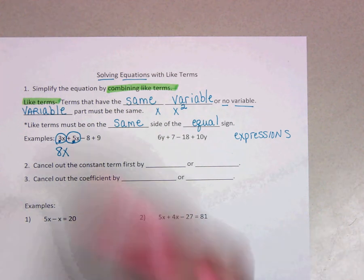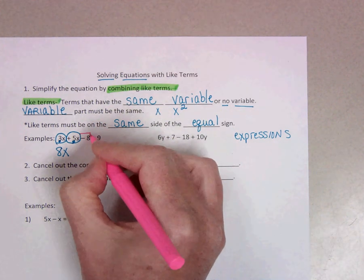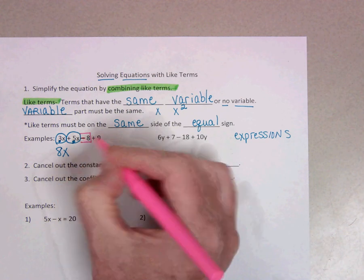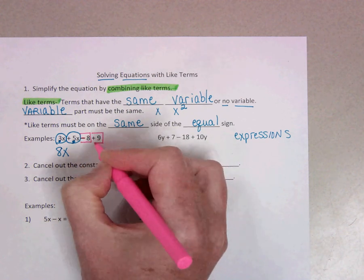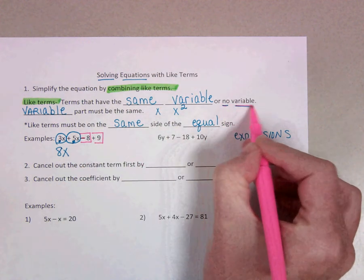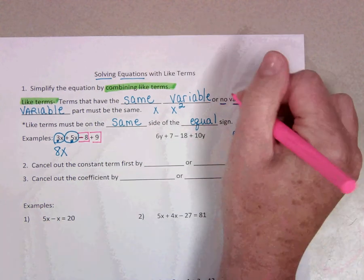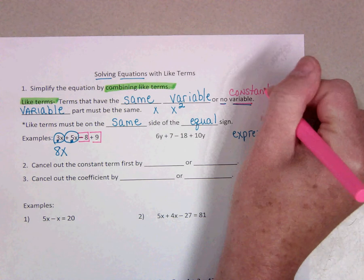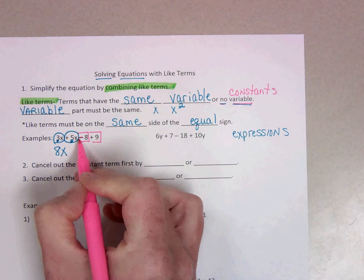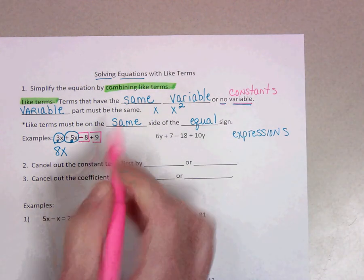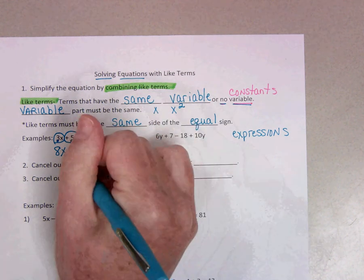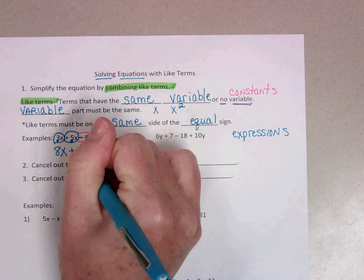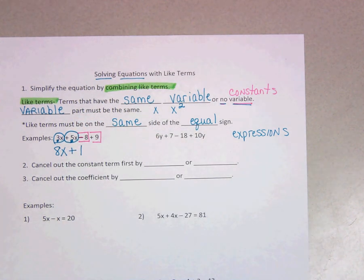And then also look here, we also have negative 8 plus 9. Those have no variable. Remember, those are called constants. So we can put negative 8 plus 9 together, which is positive 1. So I would write plus 1. That's what that expression would look like if we combined like terms.